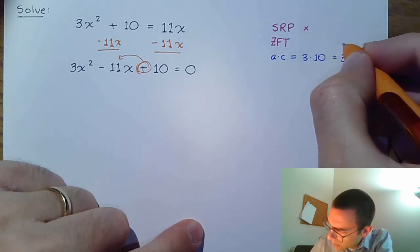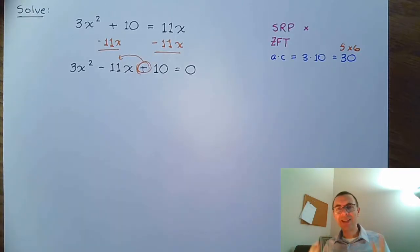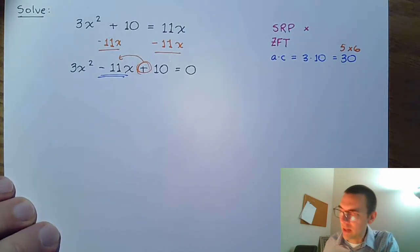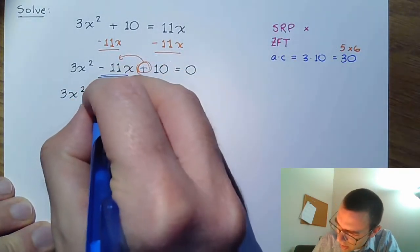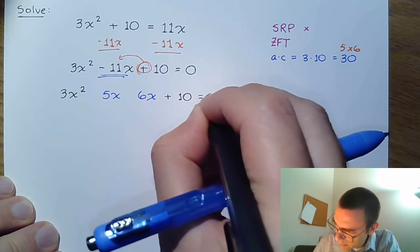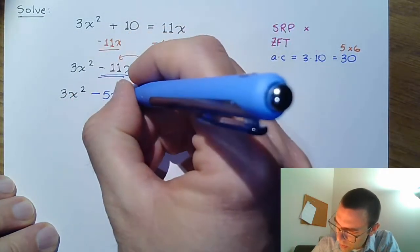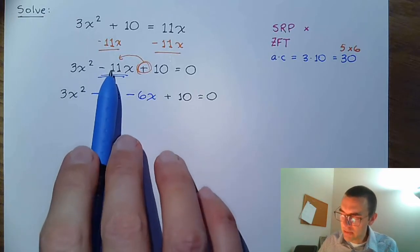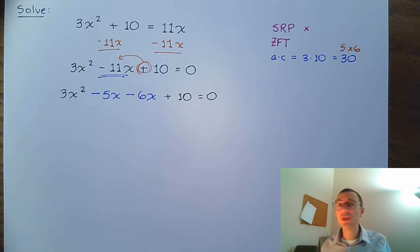If I look at 30 as 5 times 6 — those multiply to give 30 and add to give 11. So I'm going to rewrite the minus 11x using 5x and 6x. To get negative 11 when combining, both of those need to be negative, so negative 11x is the same as negative 5x minus 6x. That's like taking a $20 bill and exchanging it for a $10 bill and two $5 bills — it's the same thing, it just looks different.